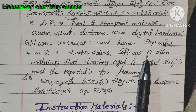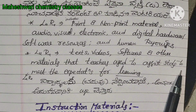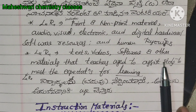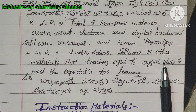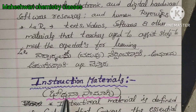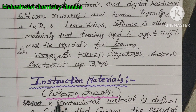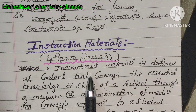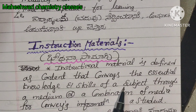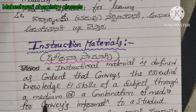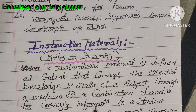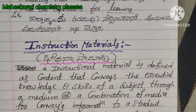You can start with learning resources and instructional materials. Instructional material is defined as content that conveys the essential knowledge and skills of a subject through a medium or combination of media for conveying information to a student.